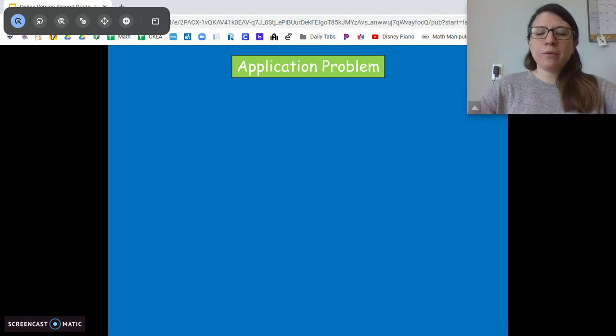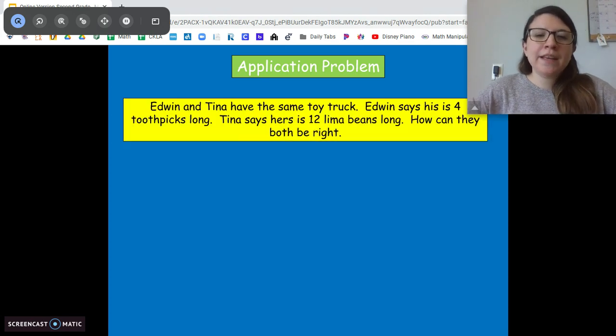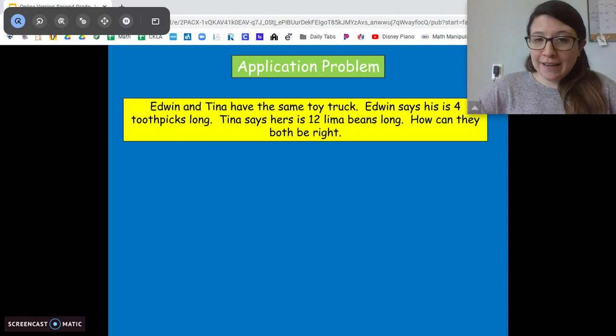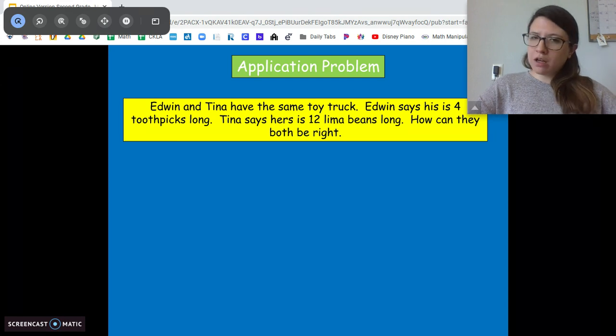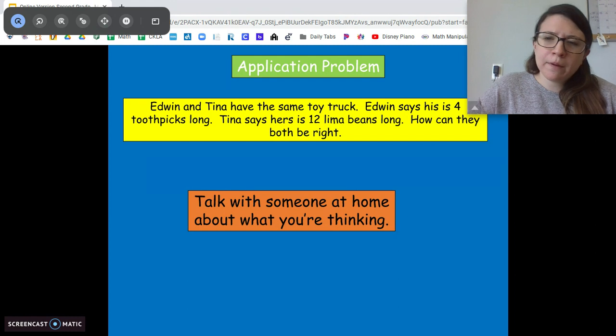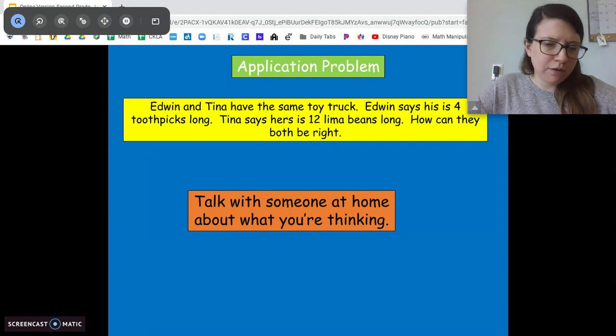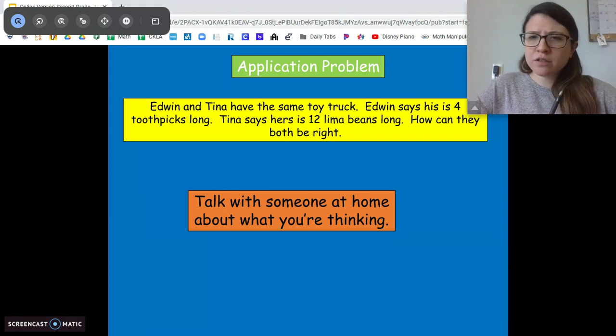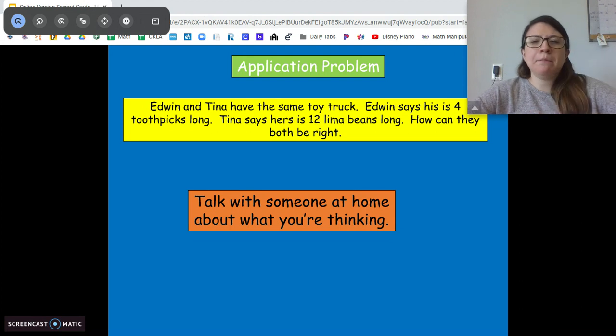All right, let's start with our application problem today. This says Edwin and Tina have the same toy truck. Edwin says his is four toothpicks long. Tina says hers is 12 lima beans long. How can they both be right? I want you to talk to someone at home about how they can both be right or pause and talk to me. How can both of them be right?